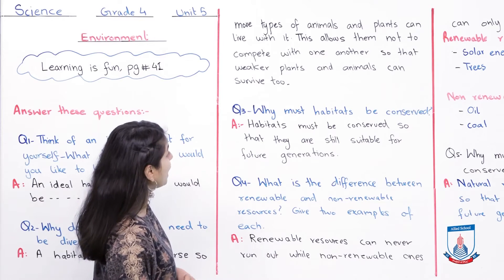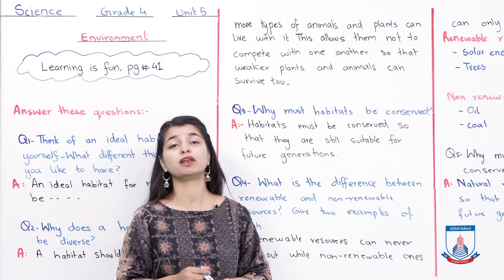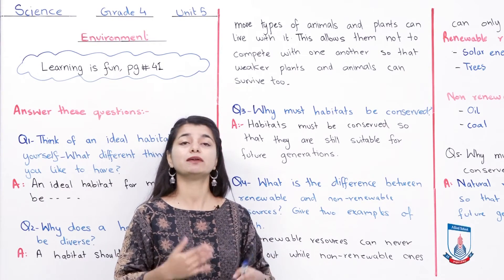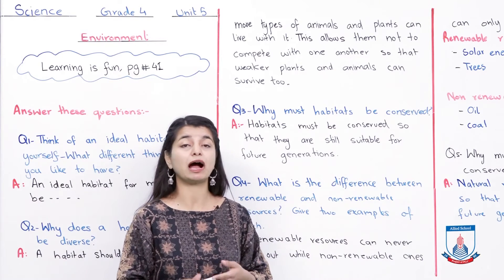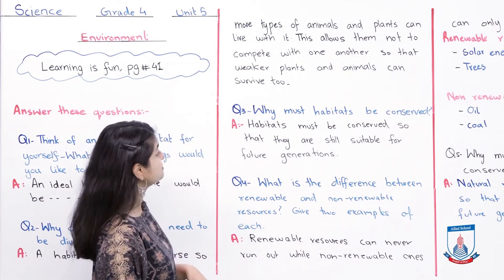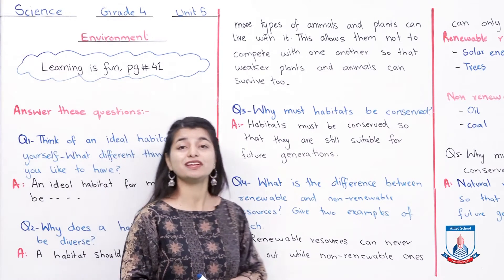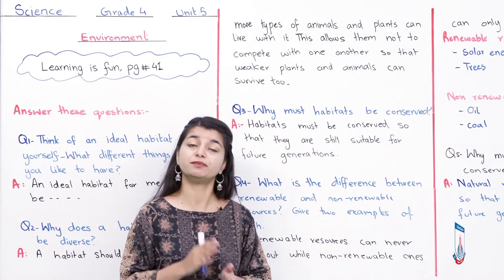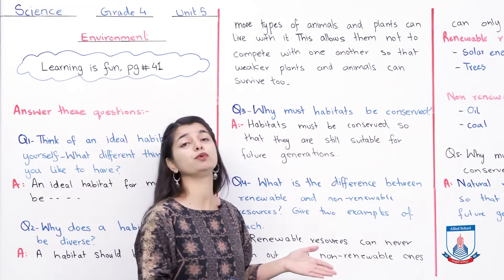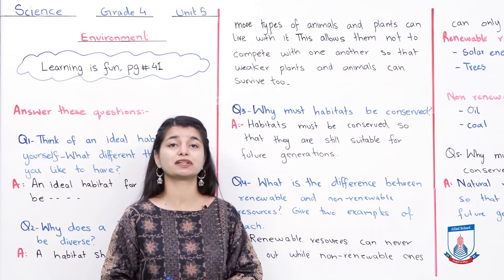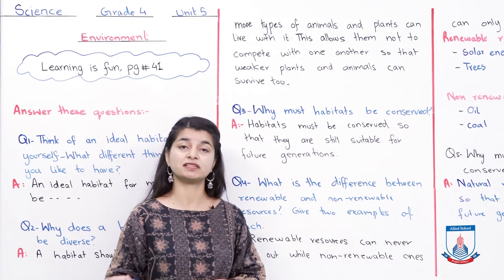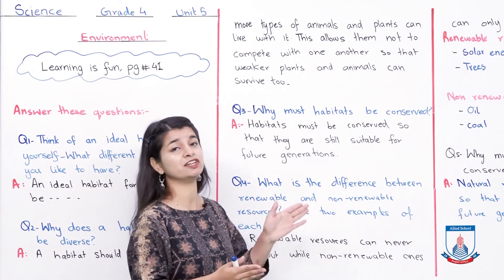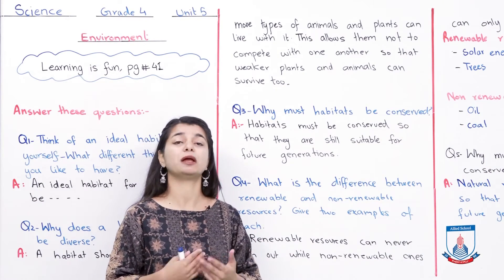Question number three: Why must habitats be conserved? If you remember conservation — you should protect and manage your environment and natural resources so that they will be saved for the next generations, and will not end with you. Habitats must be conserved so that they are still suitable for future generations, so that water, forests, and minerals are available. You can read more details in the conservation chapter. You can simply write this as it is a direct answer, but obviously you can explain it too.